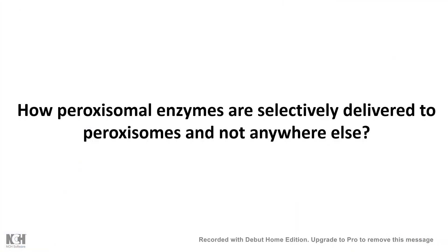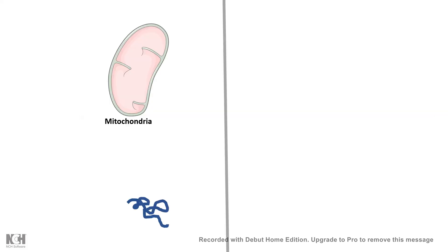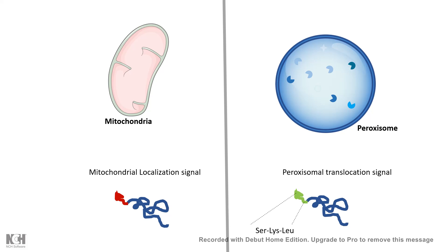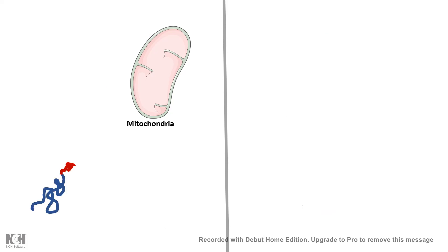This video is about how that delivery mechanism works. A key question is: how are peroxisomal enzymes selectively delivered to the peroxisome and not anywhere else? Just like mitochondria have a mitochondrial localization signal, peroxisome-destined proteins also have a peroxisomal translocation signal, or PTS. In most cases this is the PTS1 signal, which is the sequence serine-lysine-leucine, though some proteins have a PTS2 signal, which is less common.